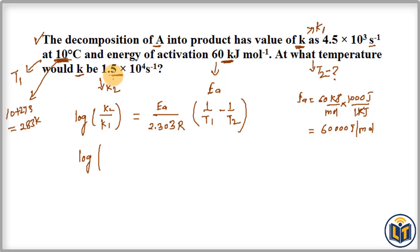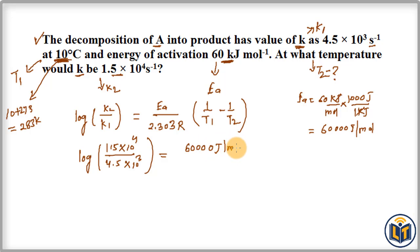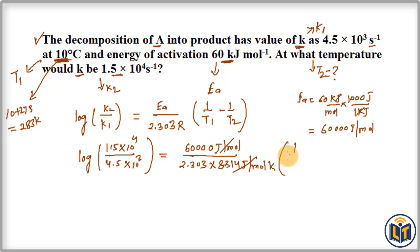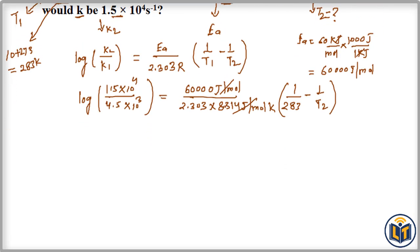Now we plug in the values: log(1.5 × 10⁴ / 4.5 × 10³) = 60,000 / (2.303 × 8.314) × (1/283 − 1/T2). Joules per mole cancels out. T2 is the only unknown to be calculated; all other components are known and their values are plugged in. We can now simplify this expression to find T2.